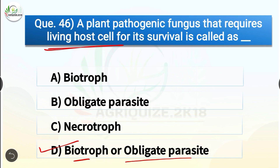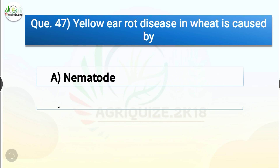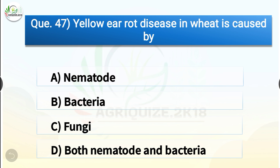Question number forty-seven: Yellow ear rot disease in wheat is caused by dash. The options are nematode, bacteria, fungi, or both nematode and bacteria. The correct answer is option D, both nematode and bacteria. Tundu disease is also known as yellow ear rot disorder. It is caused by the combined action of nematode Anguina tritici and bacterium Clavibacter tritici, resulting in Tundu disease.